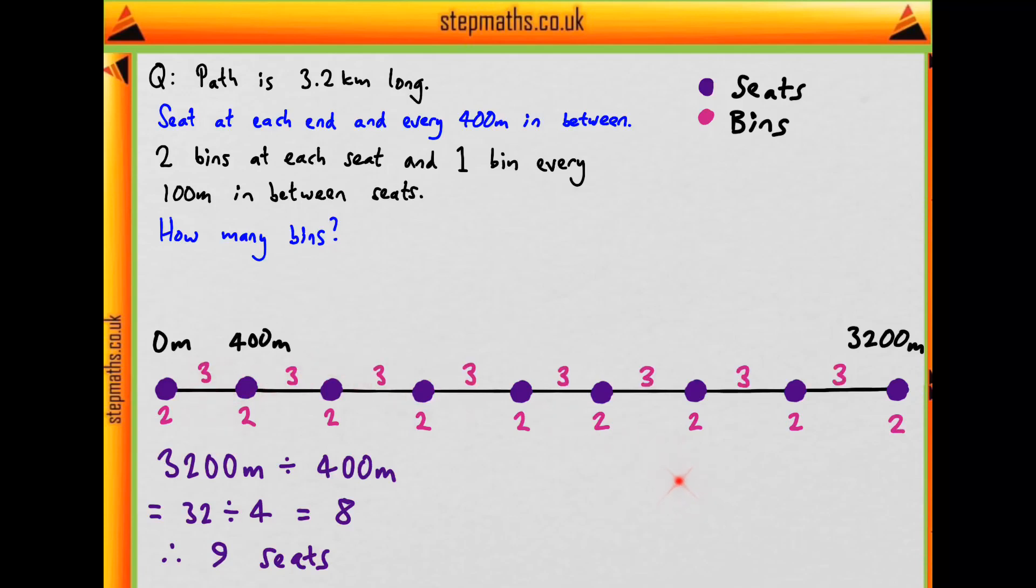So how many bins is that total? So how many 3's do we have? That's 1, 2, 3, 4, 5, 6, 7, 8 times 3, then we know there are 9 seats, so we have 9 times 2. So 8 times 3 plus 9 times 2 is 24 plus 18, which comes out as 42 bins total. So this is the final answer, which corresponds to B on the question paper.